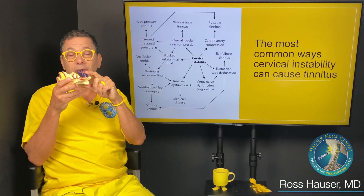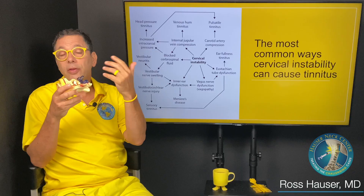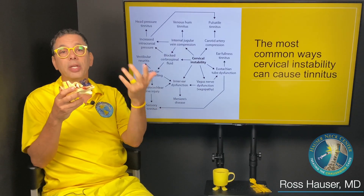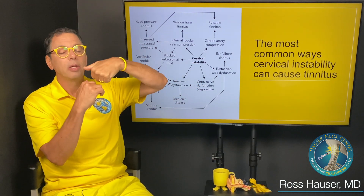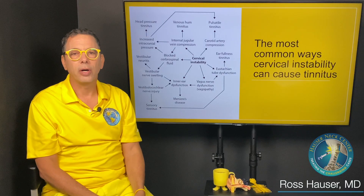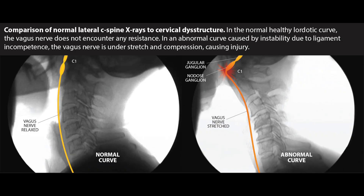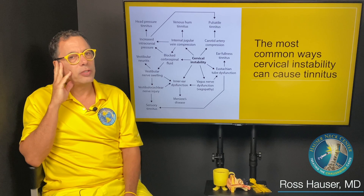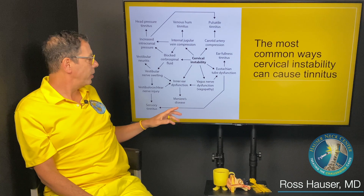When cervical instability causes a blockage of cerebrospinal fluid, that fluid affects all the cranial nerves, including the vestibular cochlear nerve involved in hearing, which can cause compression or injury to that nerve and contribute to tinnitus. Additionally, when cervical instability breaks down the cervical curve — called cervical disstructure — it can stretch the vagus nerve, impairing the levator veli palatini muscle so the palate doesn't elevate normally, causing the eustachian tube not to open or close normally, resulting in eustachian tube dysfunction and ringing in the ears.